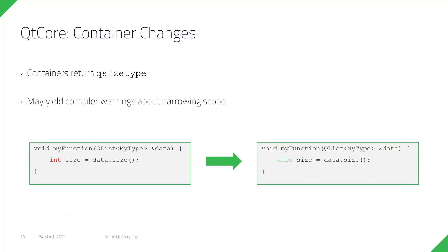The last Qt Core change here: containers now return qsizetype instead of int. This isn't a big migration issue, but you might get compiler warnings about narrowing the scope when using 'size()' for example. The fix is to replace the size variable with an auto type. This change now allows using larger containers with indexes beyond the 32-bit range.